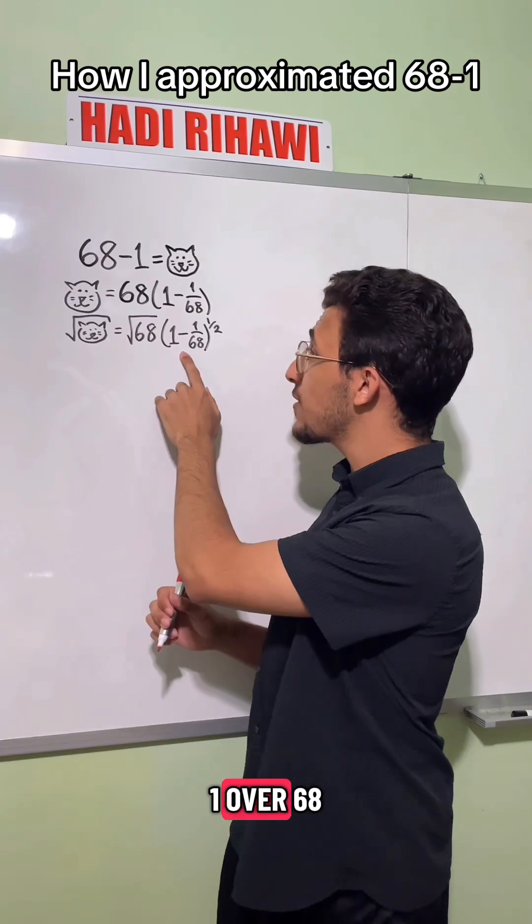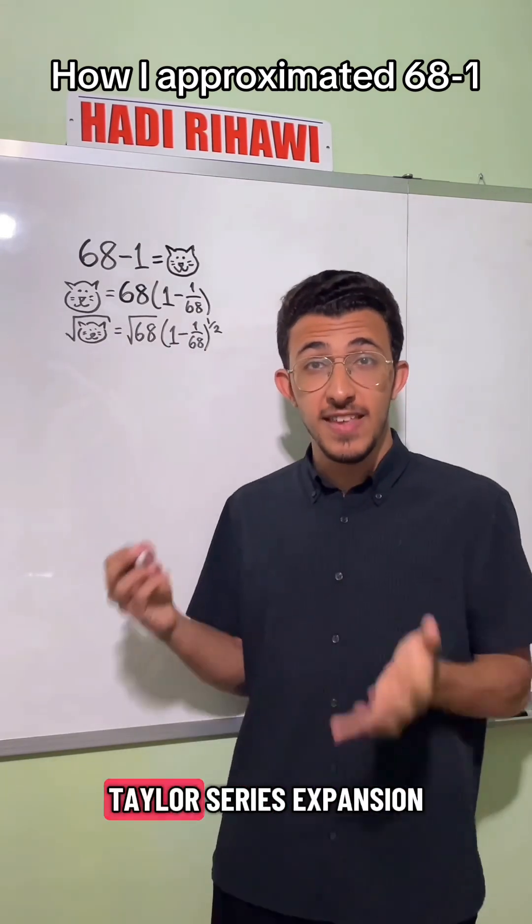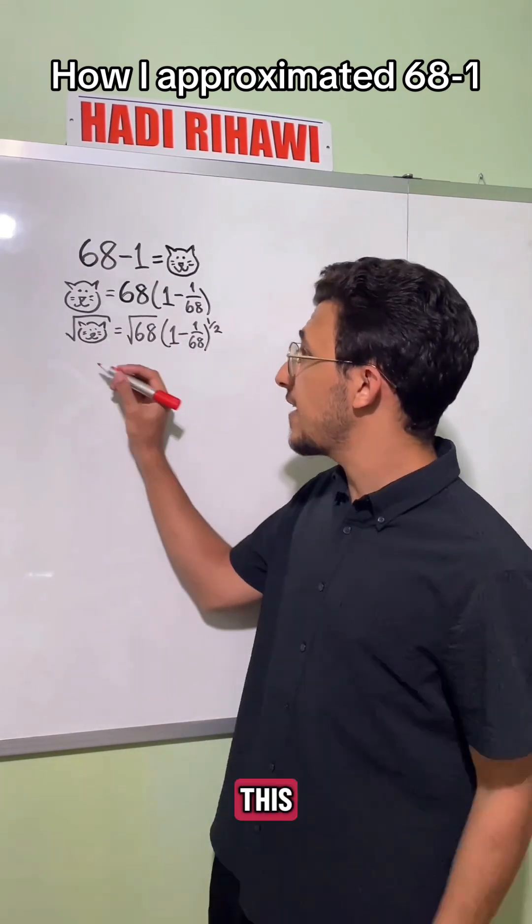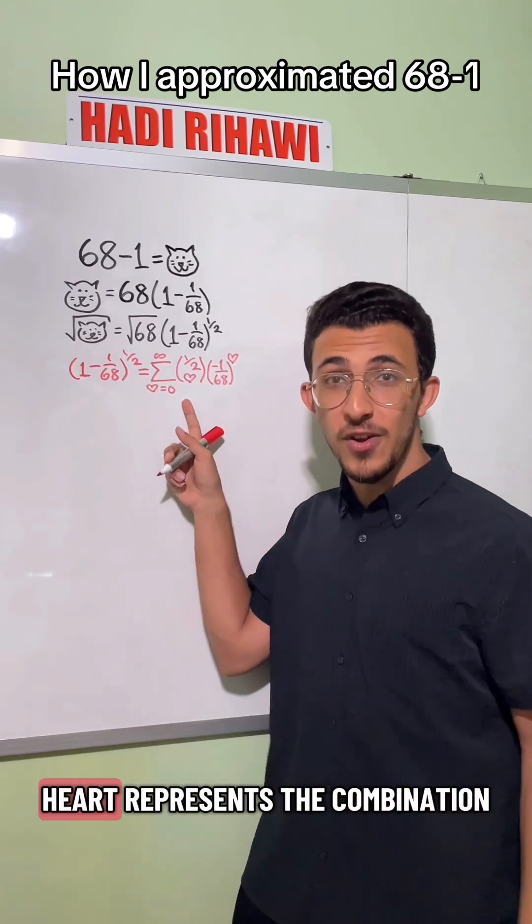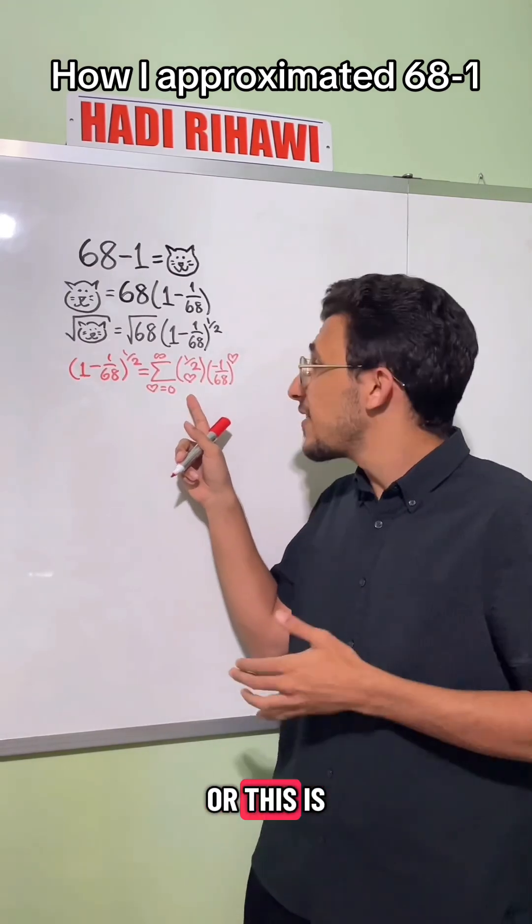Next, I wrote this 1 minus 1 over 68 to the 1 half term as its Taylor series expansion, which looks like this, where this 1 half over this heart represents the combination, or this is 1 half choose heart.